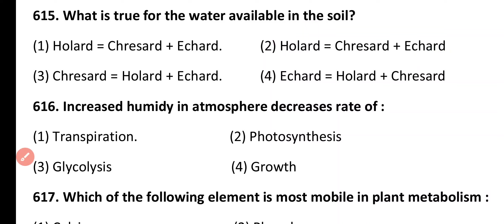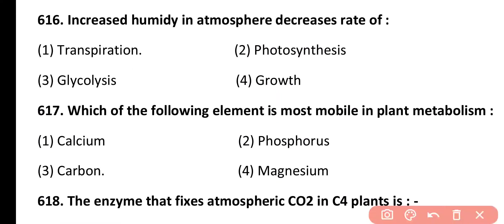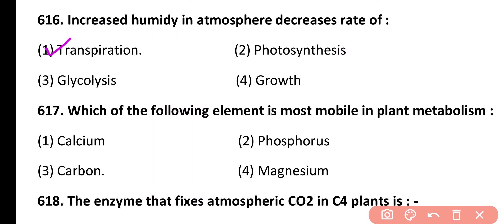Question 616. Increased humidity in atmosphere decreases the rate of: transpiration, photosynthesis, glycolysis, growth. Correct answer is option 1. When humidity increases in the atmosphere, the rate of transpiration slows down and decreases.